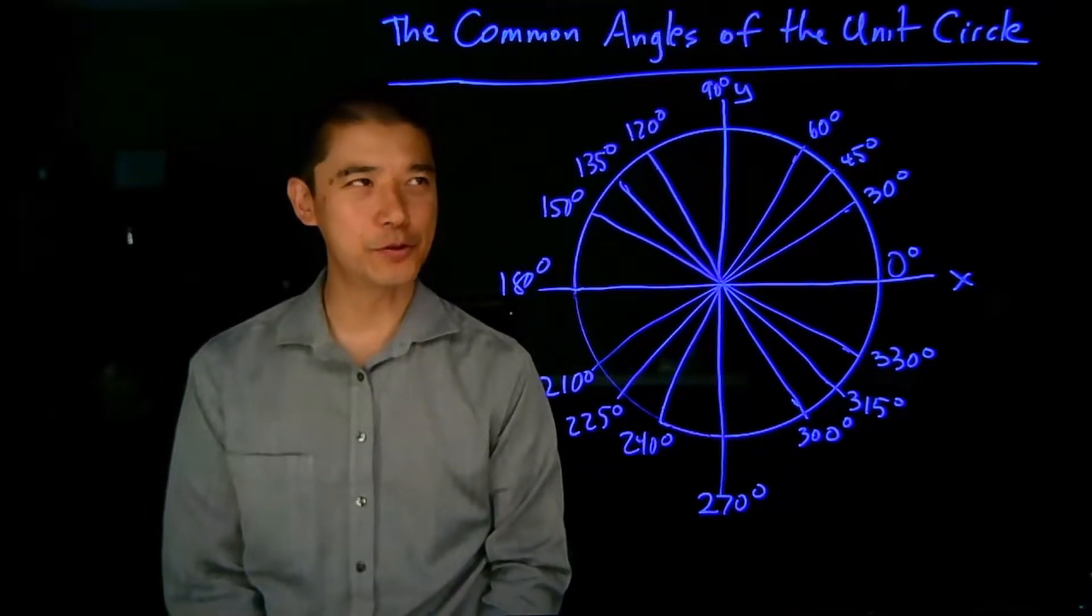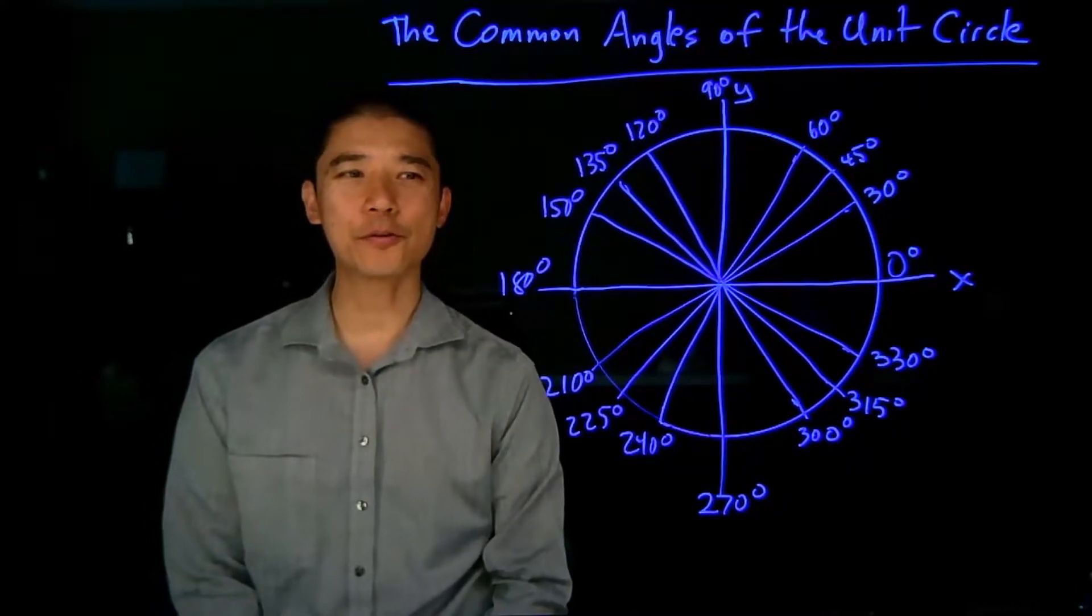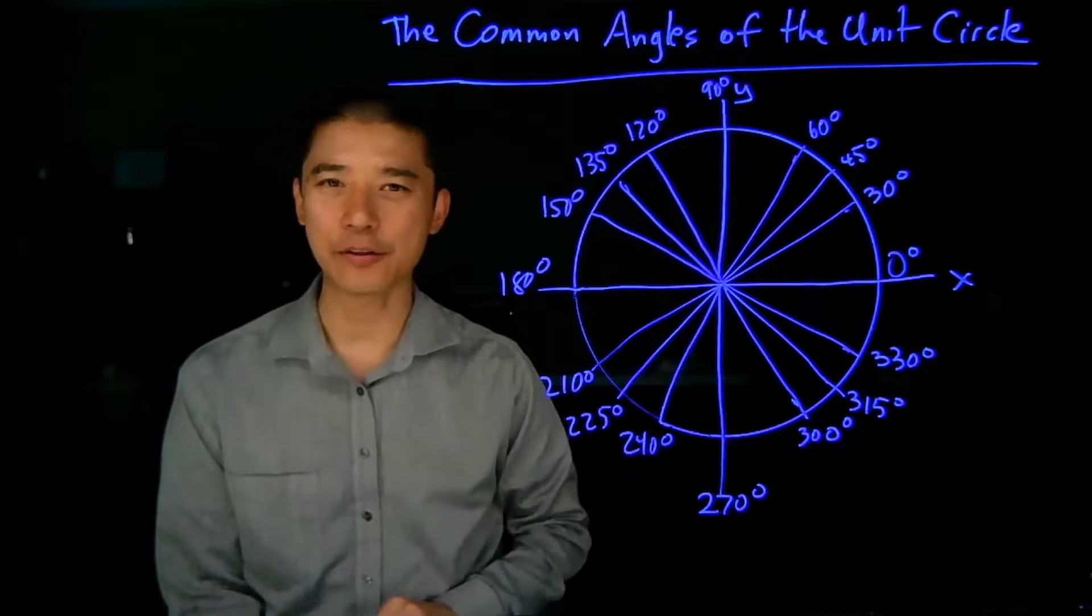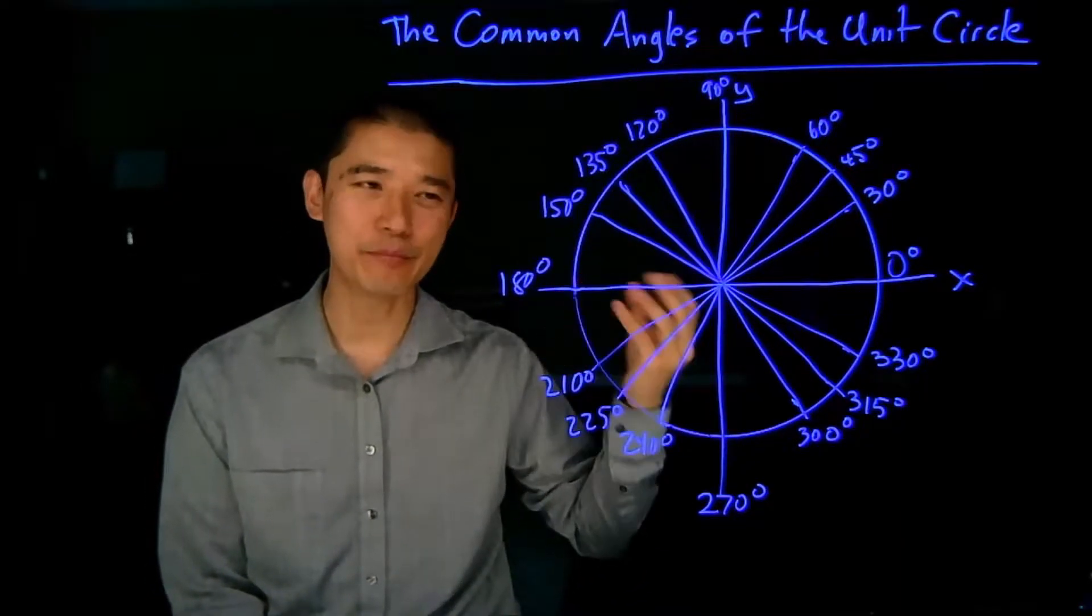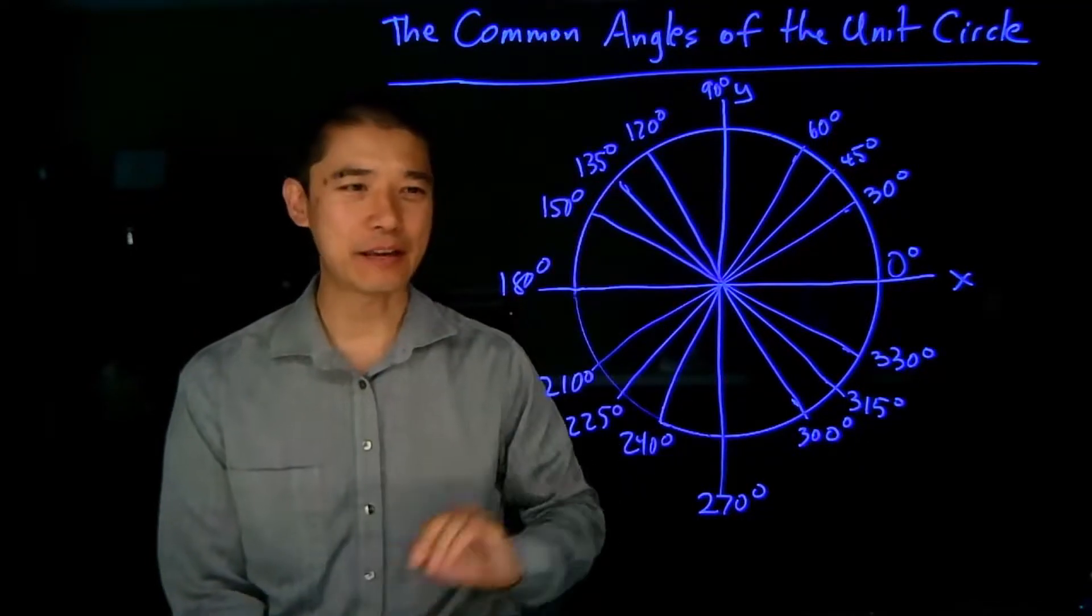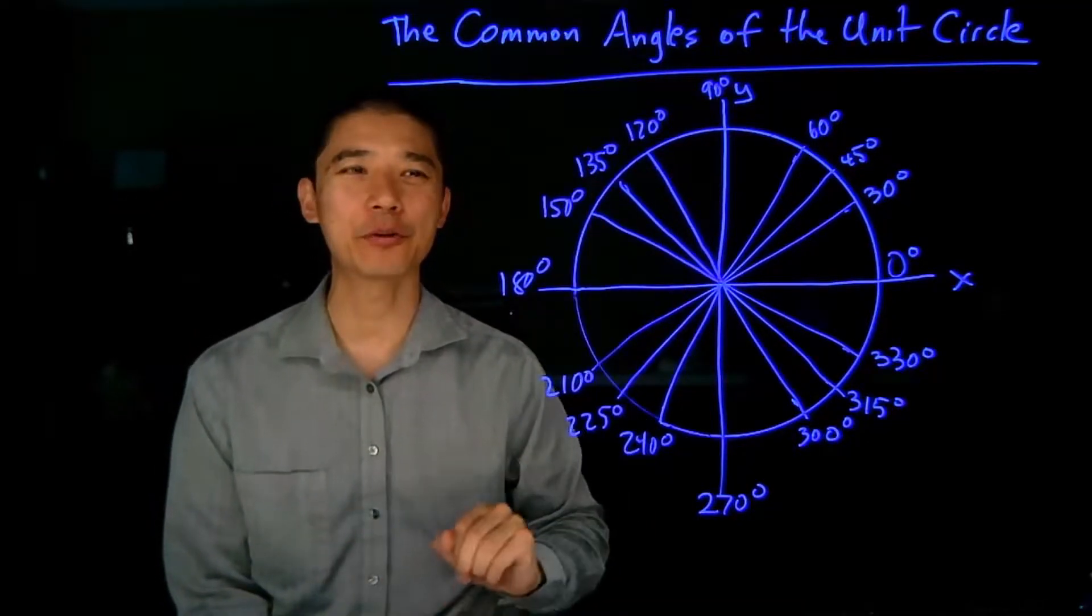We're going to take a moment to talk about the unit circle. The unit circle is the circle of radius 1 centered at the origin. When I say the unit circle, a lot of students bring to mind this diagram that has a whole bunch of numbers here. We also have a version of this that's in radians that we'll look at in a moment.